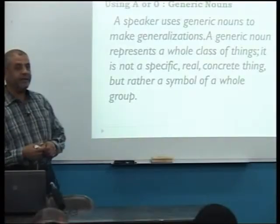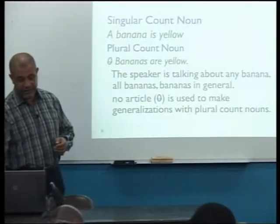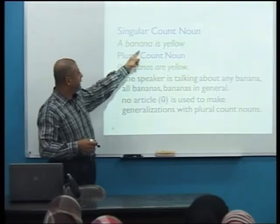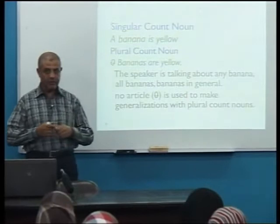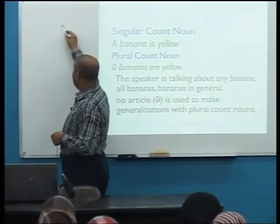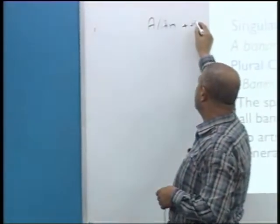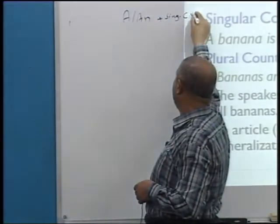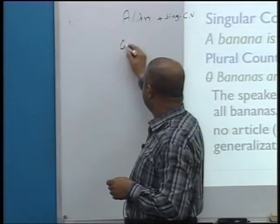We talked about using the article. How can we make a generic noun? For example, 'a banana is yellow' — banana here is generic. We can use the indefinite article a or an plus singular count nouns.